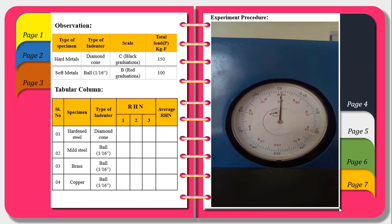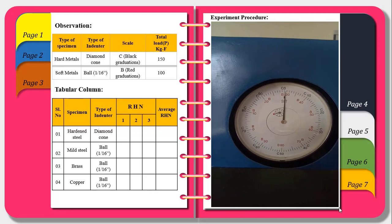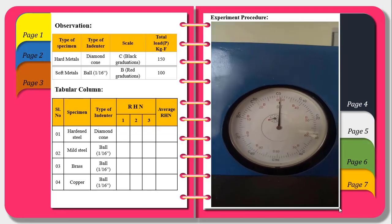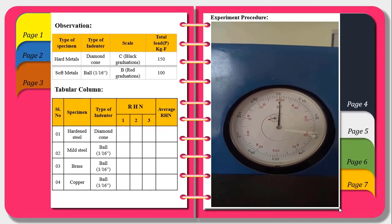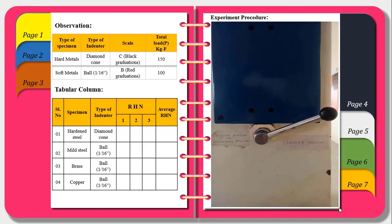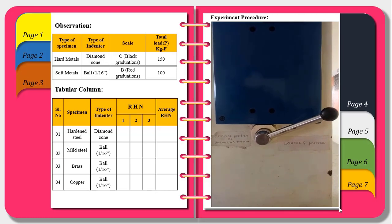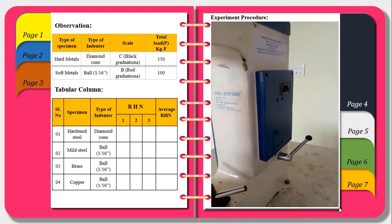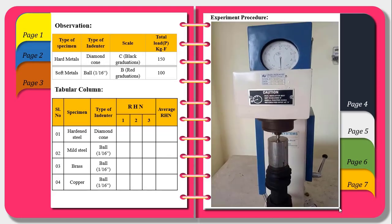While doing this experiment we should carefully do it. After once the small dial is at red point, we have to turn the loading lever to loading position. Then the specimen takes the load and we have to leave it for 20 seconds.